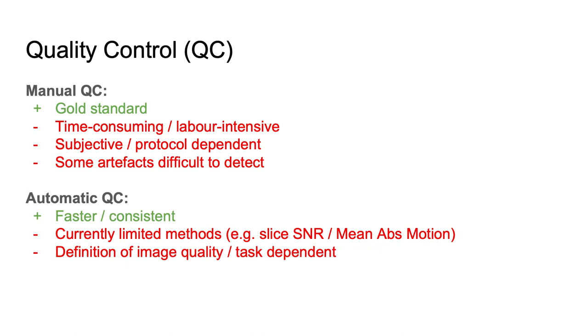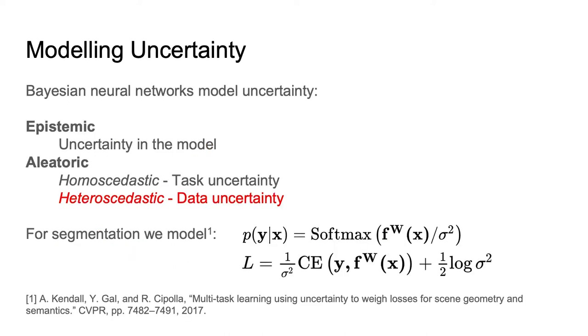However, automated QC remains an unsolved problem and the gold standard is manual visual inspection. We propose to use Bayesian neural networks where heteroscedastic uncertainty provides a natural way of modeling the quality of the data.